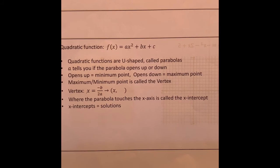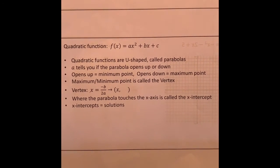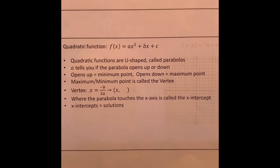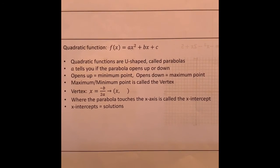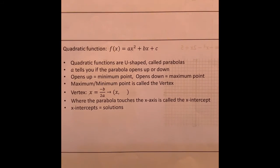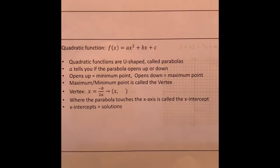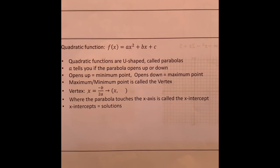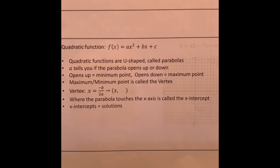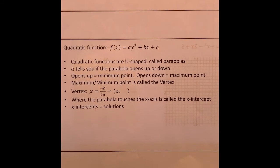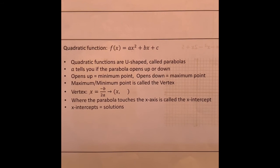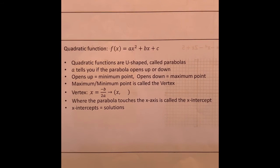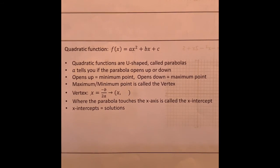The maximum and minimum point are called the vertex. The formula that helps us find the x-coordinate of the vertex is x equals negative b over 2a — that's part of the quadratic formula from another lesson. Once you know the x-coordinate, you plug it into the function to get the y-coordinate.